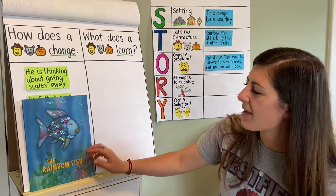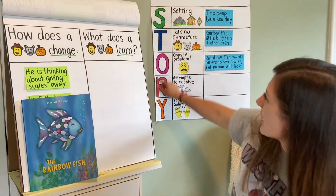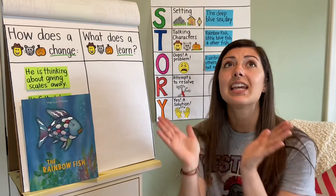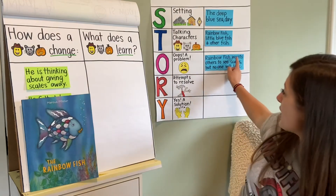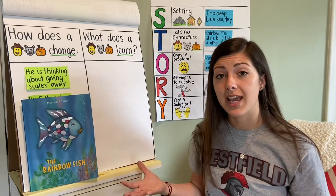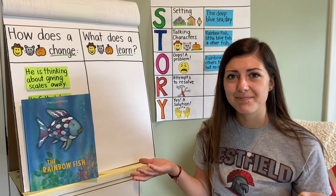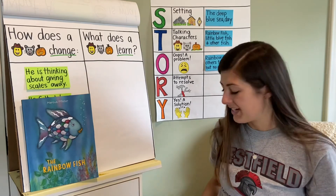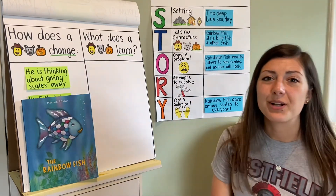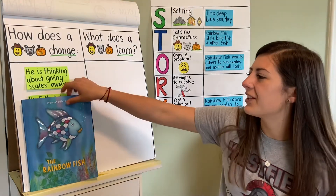Now, as I'm thinking about my book The Rainbow Fish, I want to think about our story chart. We have our setting, our talking characters, our oops — a problem. But I noticed I don't have my Y filled in yet — I don't have a yes, a solution. Our problem was the Rainbow Fish wants others to see his scales but nobody will look. How did our Rainbow Fish solve his problem? The Rainbow Fish solved his problem by giving away his shiny scales to everyone. He shared his scales and then everybody could see them because they were on everybody.